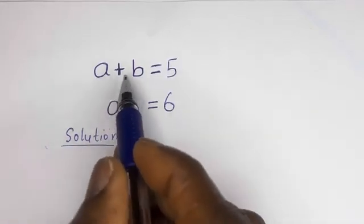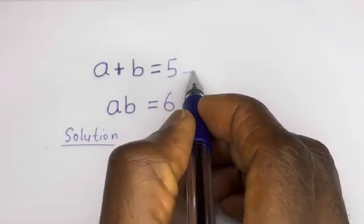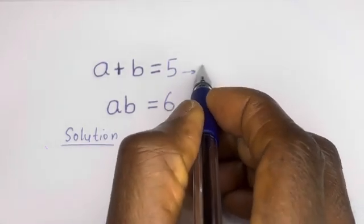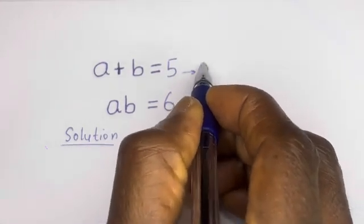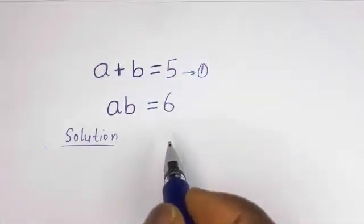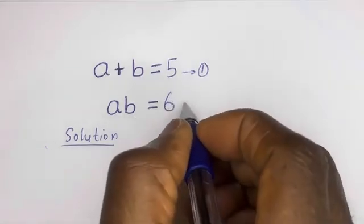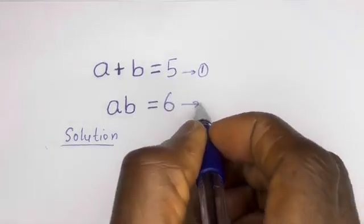a plus b is equal to 5 — let's call this equation 1. a times b is equal to 6 — let's call this equation 2.